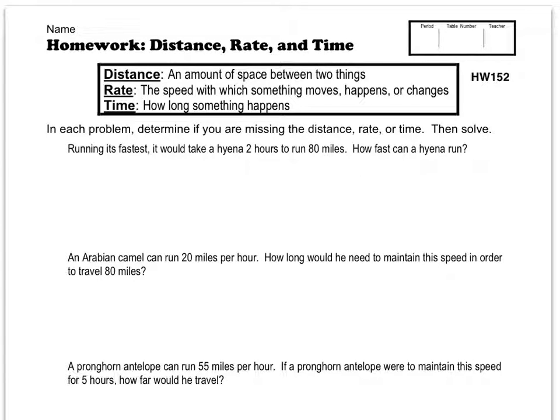Hello and welcome to tonight's homework help for Tuesday night, November 27th, 2012. We're going to jump right in with tonight's homework: distance, rate, and time. Definitions are here. Distance is an amount of space between two things. Rate is the speed with which something moves, happens, or changes, and time is how long something happens.